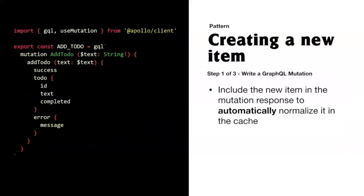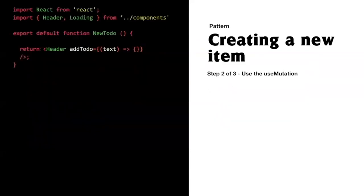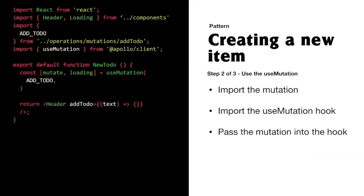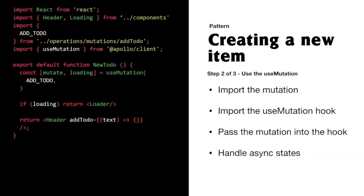In the next pattern — creating a new item — we can write a mutation the same way we wrote a query. There's a small but important thing to note: we include the new to-do in the mutation response. When we do this, the cache is smart enough to identify that something new was brought in, normalize it, and cache it as well. In a component, we import the mutation and the useMutation hook, pass the mutation to the hook, handle async states, and hook it directly up to the presentational component.